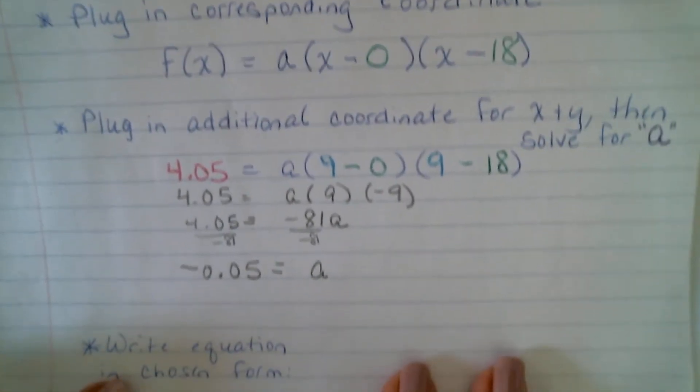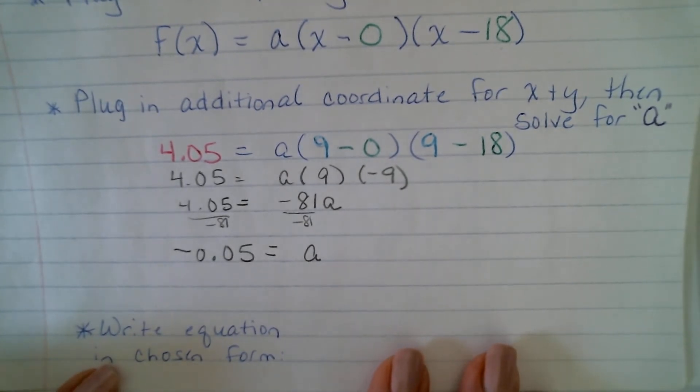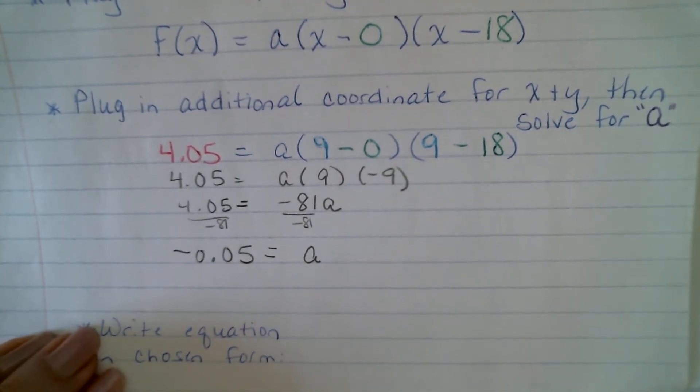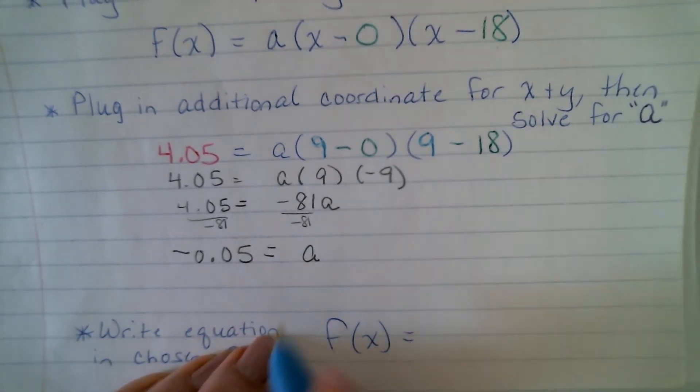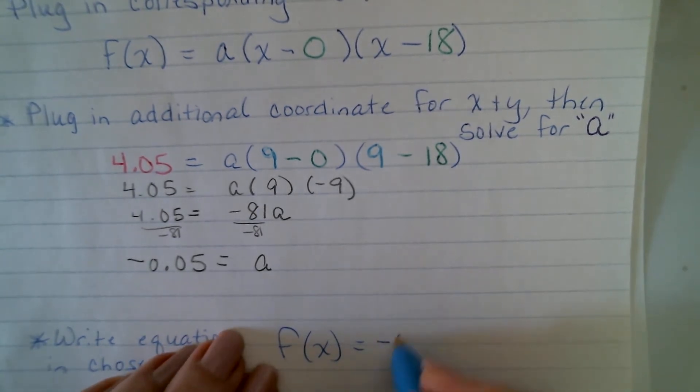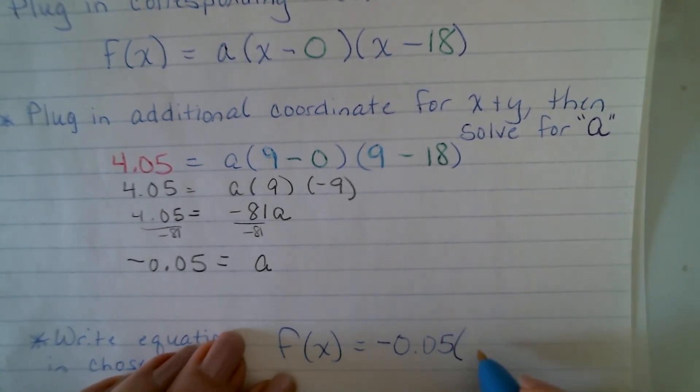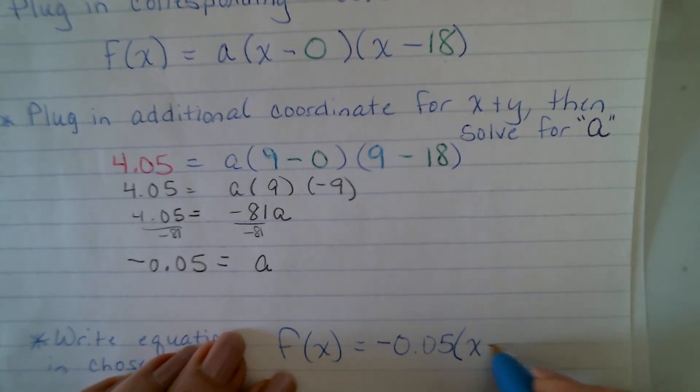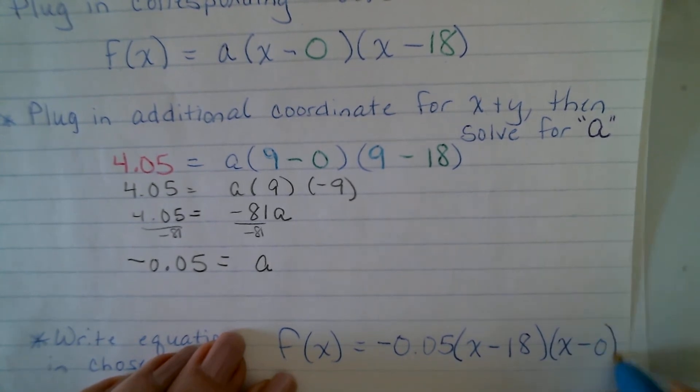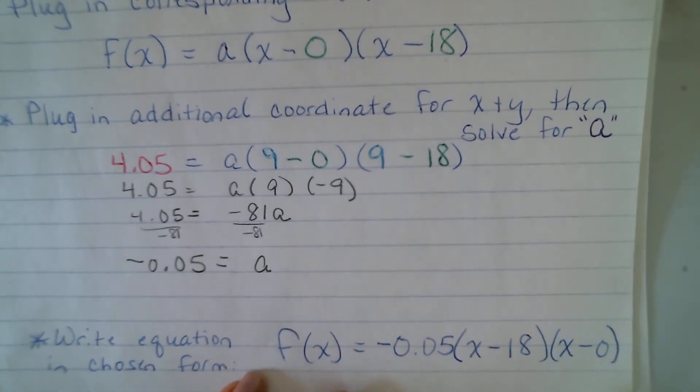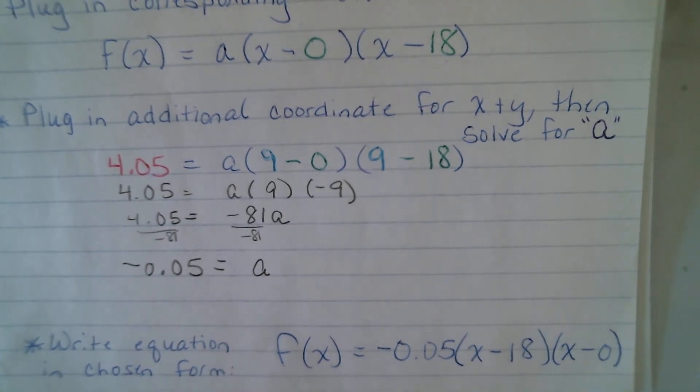All right, well, that's what we need to write our equation in the form that we chose. The form that we chose was factored. So, f of x equals, we have our a value now, negative 0.05. And we had x minus 18, and x minus 0, okay? We're going to try this with a different one on the back here. So, give me just one minute. If you want to pause this, maybe take a little brain break for a second. You're obviously welcome to do that.